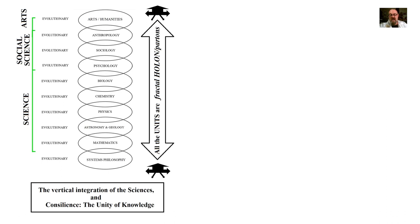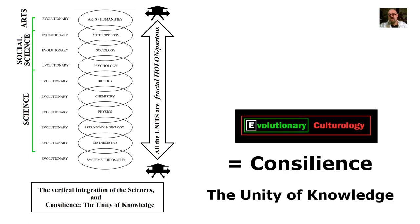There we have the vertical integration of the sciences — consilience, the unity of knowledge. All the units are fractal holon partons across all domains. The sciences blend upwards into the social sciences, and then the arts. At any rate, they're all scientific now. And that's consilience, the unity of knowledge, thanks to Ev Cult.